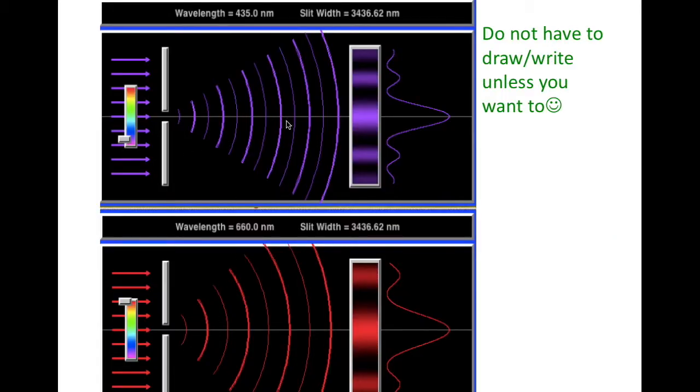Notice the top picture here with light having a wavelength of 435.0 nanometers, which is the color violet, and compare this to that of another wavelength of light which is 660 nanometers for its wavelength. Notice how much more spread out the longer wavelength of the red light is. If we look at the fringes on the detector screen over here, notice how this correlates to the width of the central maximum of both of these wavelengths.